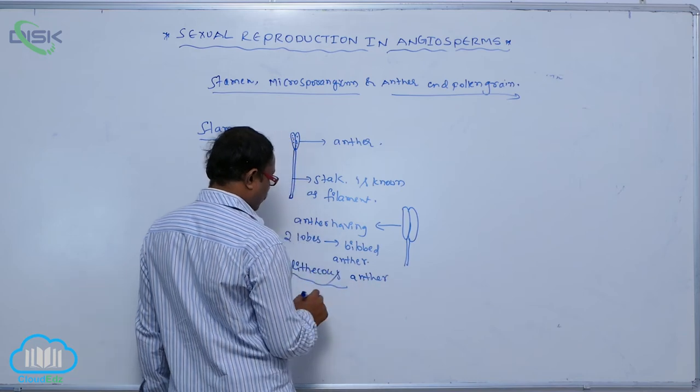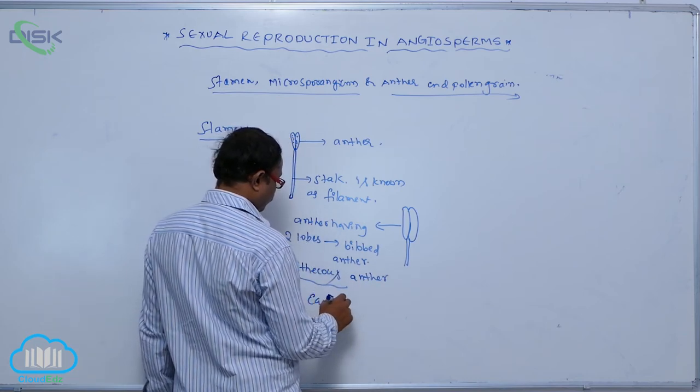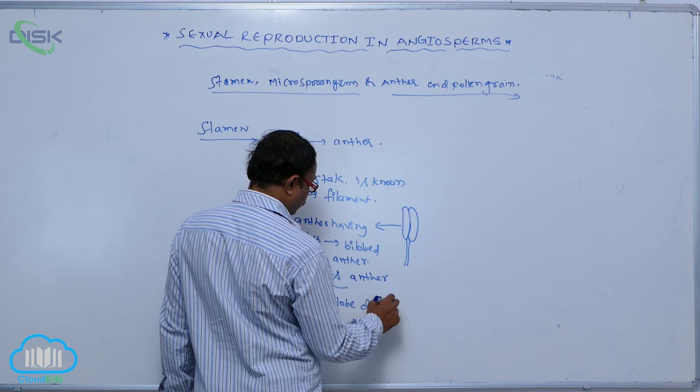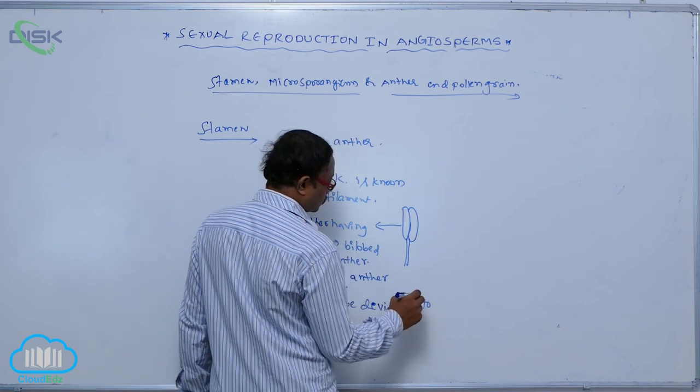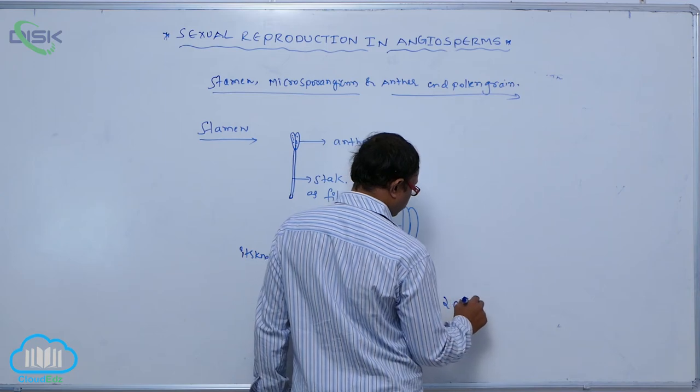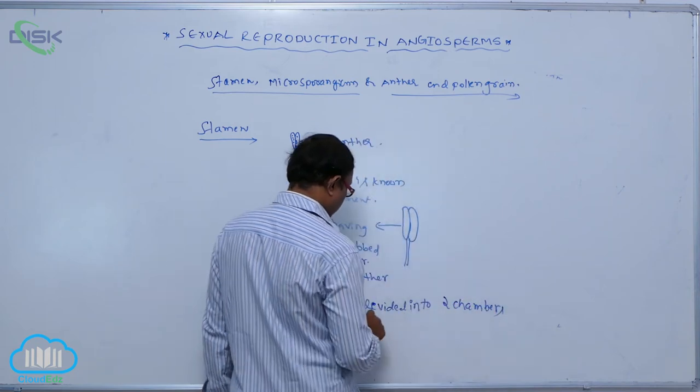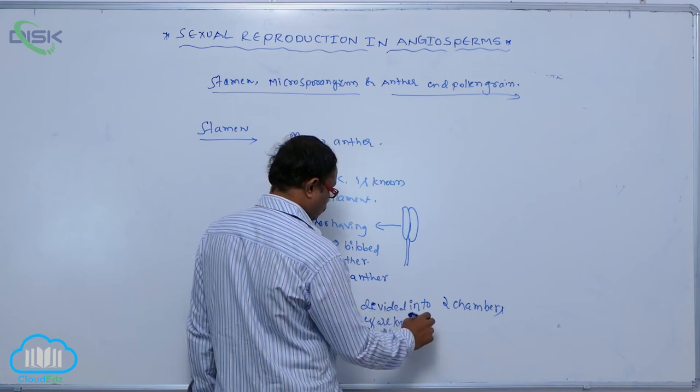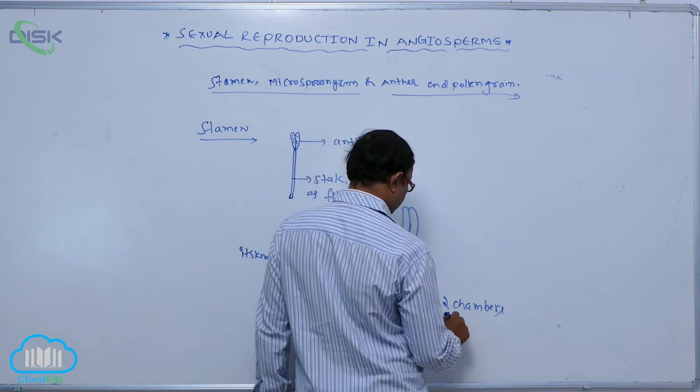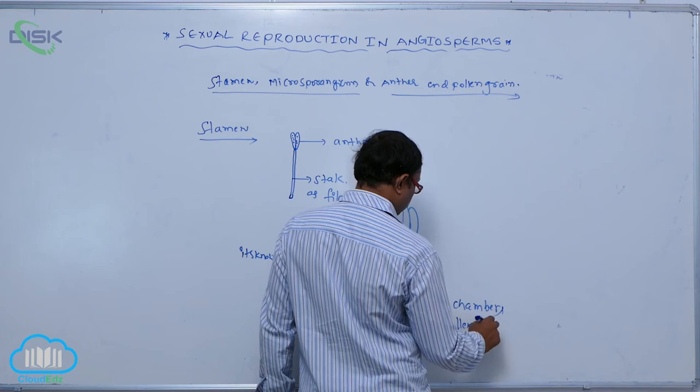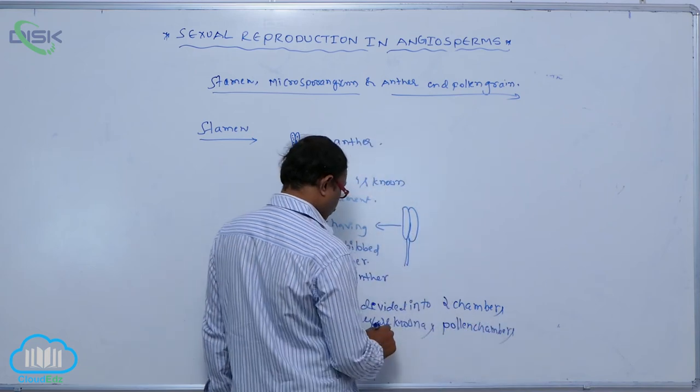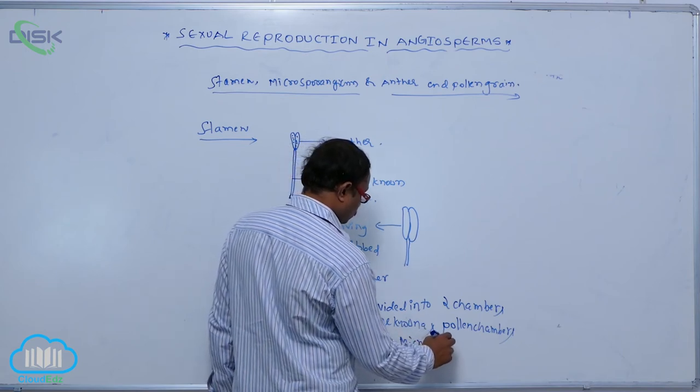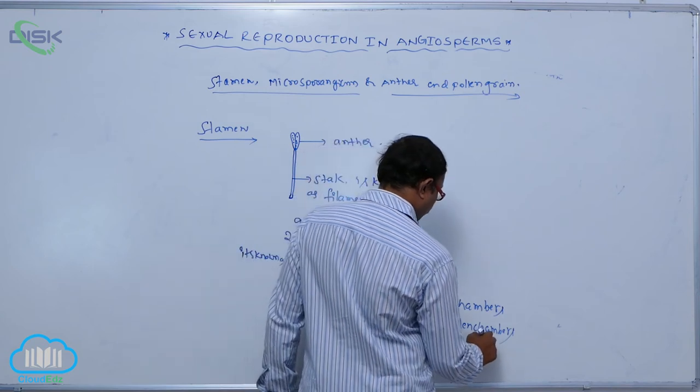Each lobe is divided into two chambers. These are known as pollen chambers or microsporangia or pollen sacs.